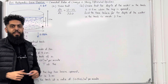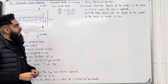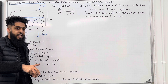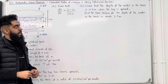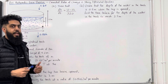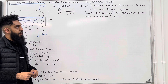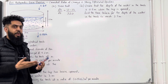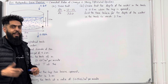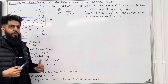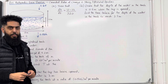Moving on to Part B. Given that the depth of the water in the tank is 0.5 metre when the tap is opened, this means when t = 0, h = 0.5. Find the time taken for the depth of the water to reach 3.5 metres — so we are trying to work out t when h = 3.5. Please pause the video and have a go at Part B.